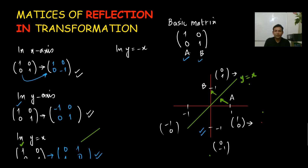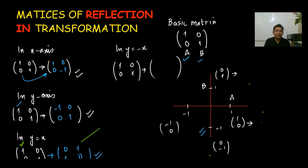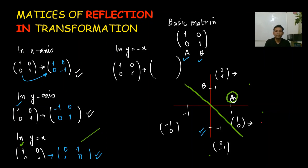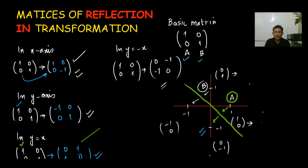For y = −x reflection: draw the line y = −x. Reflecting A = (1, 0) gives (0, −1), and reflecting B = (0, 1) gives (−1, 0). So the matrix for y = −x reflection is [0, −1; −1, 0]. That gives us all four matrices: matrix 1 (x-axis), matrix 2 (y-axis), matrix 3 (y = x), and matrix 4 (y = −x).